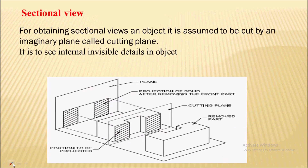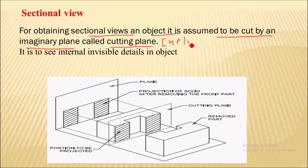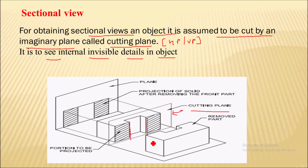First of all, what is meant by a sectional view? For obtaining sectional views, an object is assumed to be cut by an imaginary plane called a cutting plane. This cutting plane may be a horizontal plane or a vertical plane. Here you can see an object that is cut by a vertical cutting plane. The reason for cutting the object by this plane is to see the internal invisible details. After cutting by the plane, we are able to see there is a slot inside the object. So to show these internal invisible details, we use sectional views in a drawing.